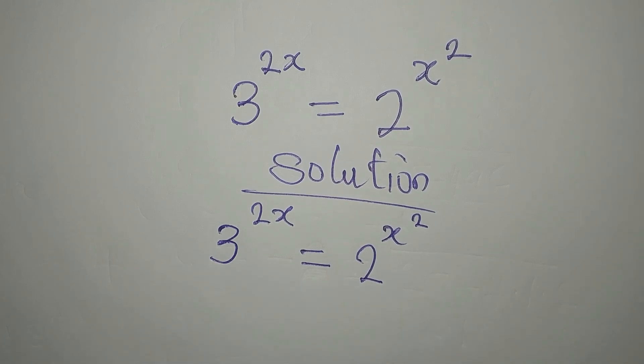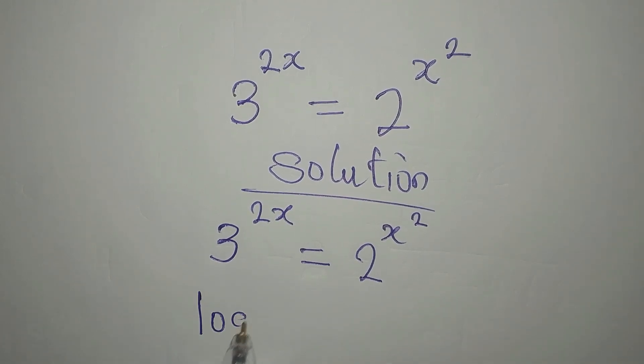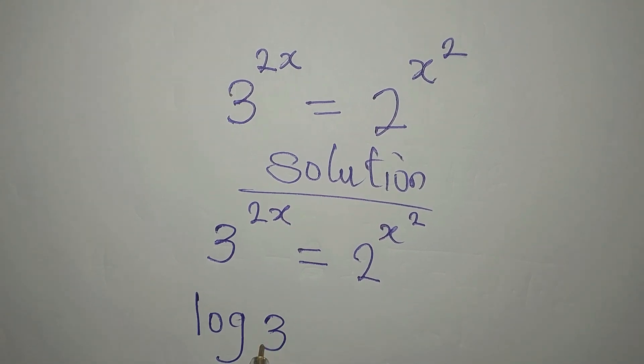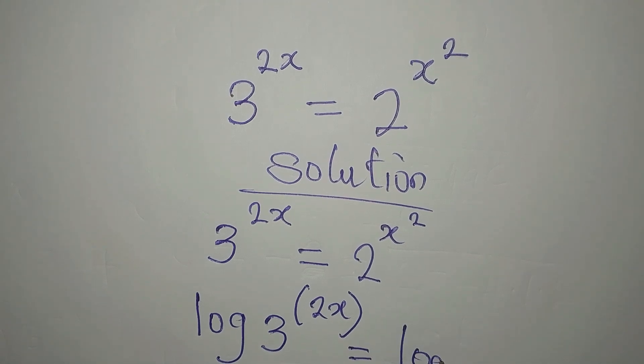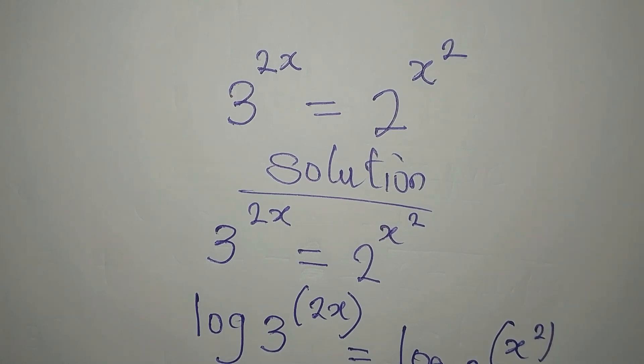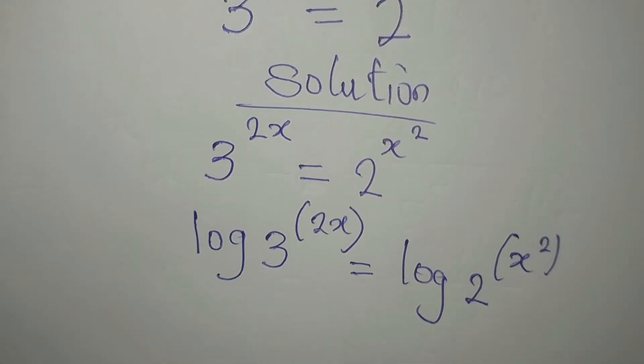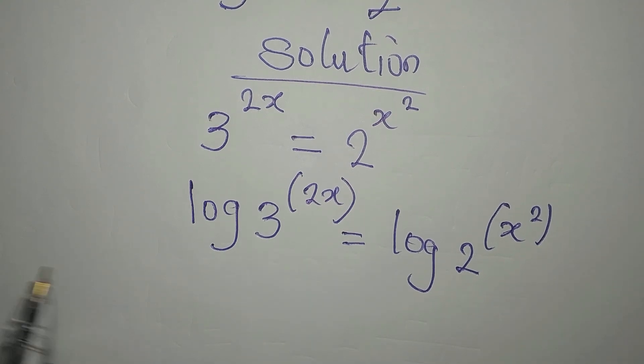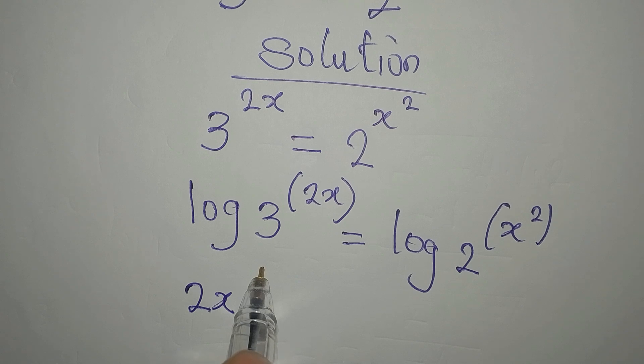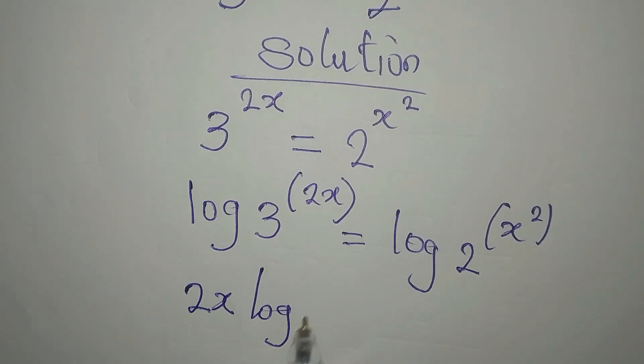We'll take the log of both sides: log 3 to the power of 2x, then on the other hand we have log 2 to the power of x squared. There's a law that says the power gets behind, so we're having 2x to multiply log 3, then here we have x squared to multiply log 2.